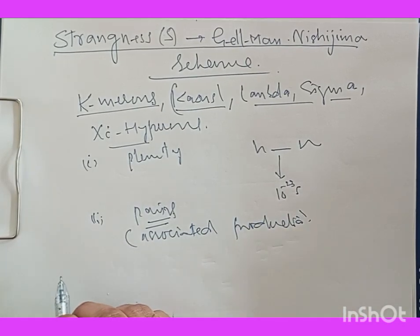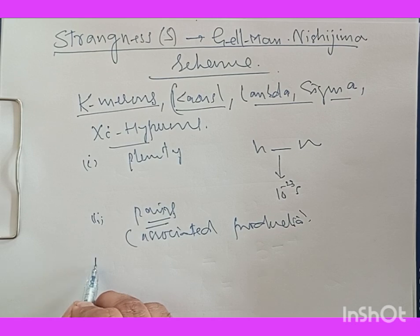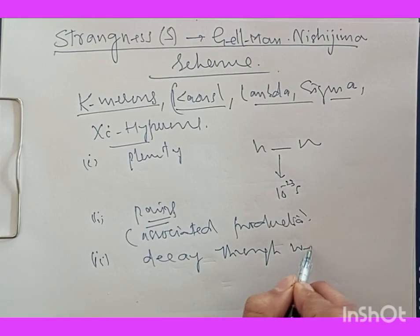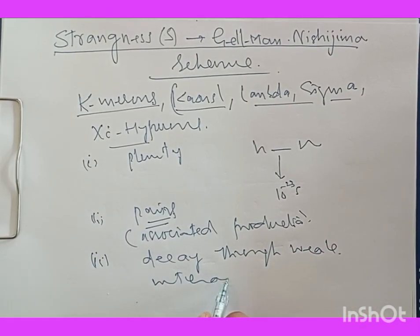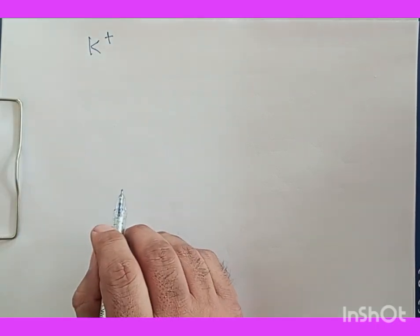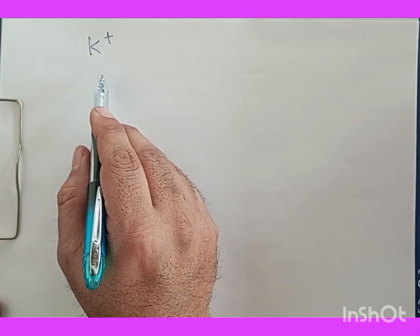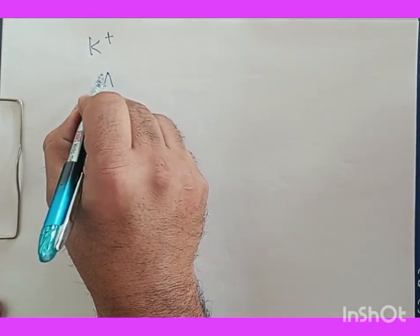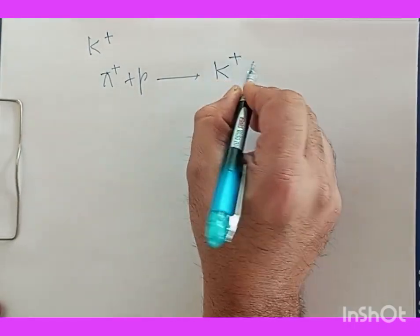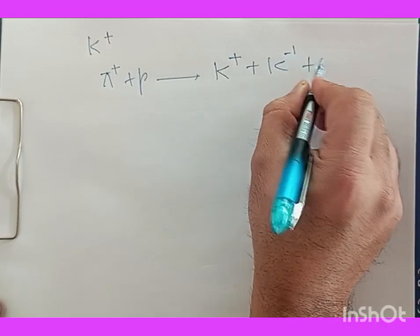The next important thing is that they decay reluctantly through weak interactions. For example, K-positive mesons are produced in pairs as follows: a pi-positive meson and a proton lead to K-positive plus K-negative and a neutron.